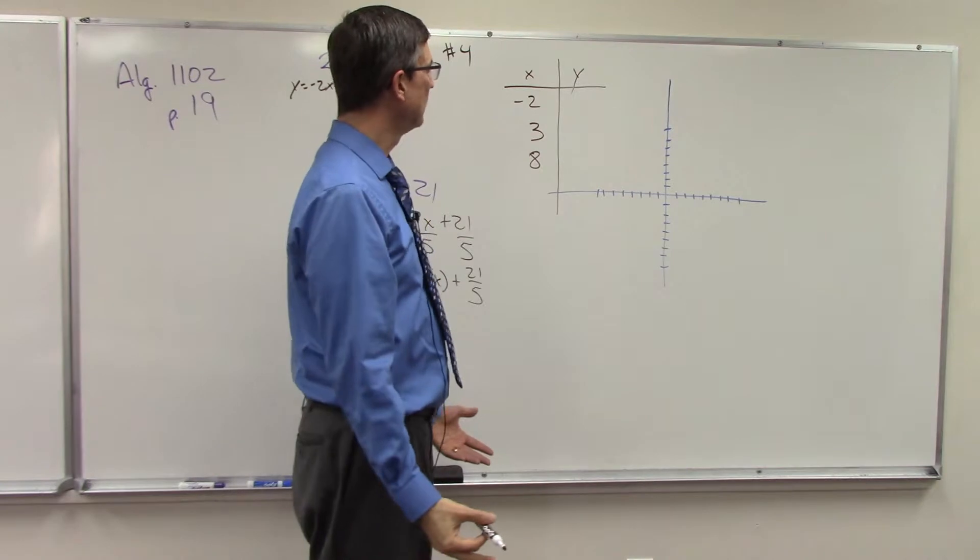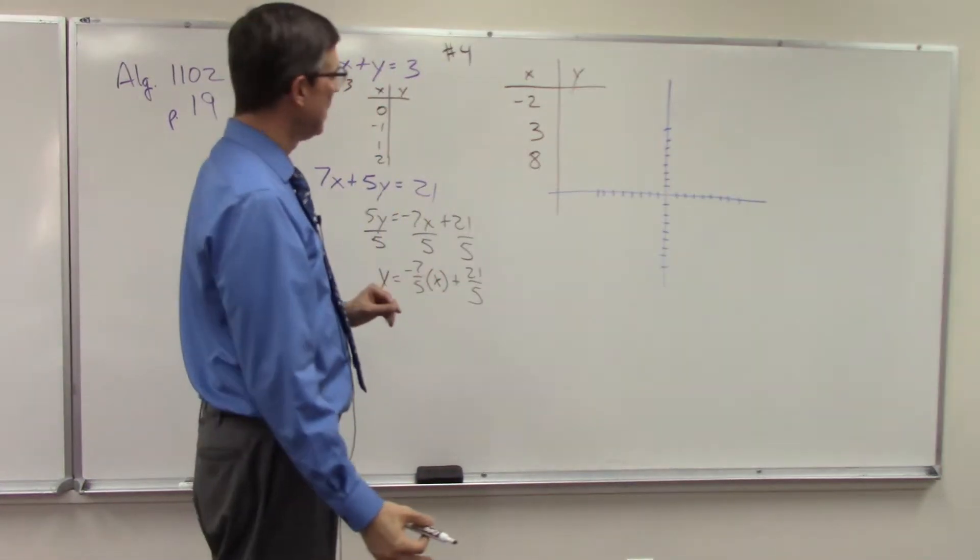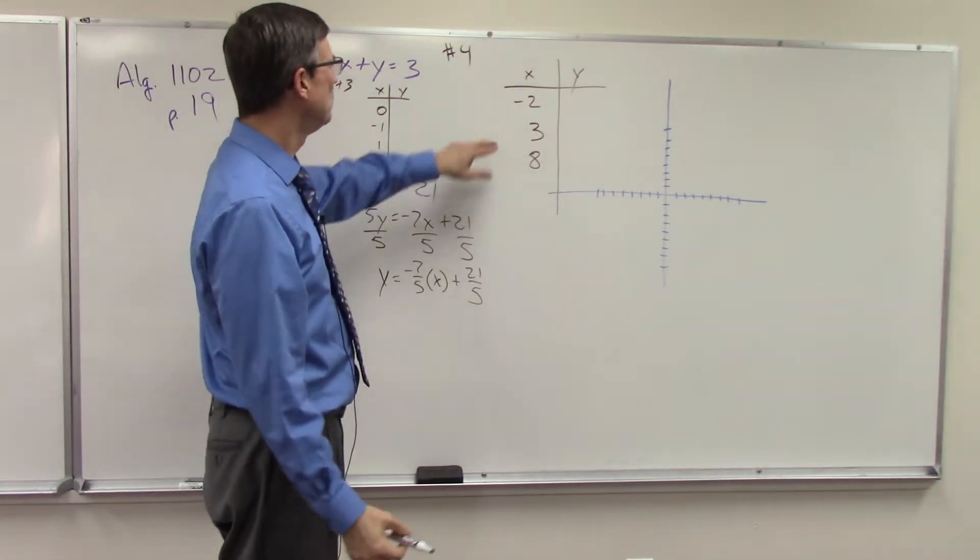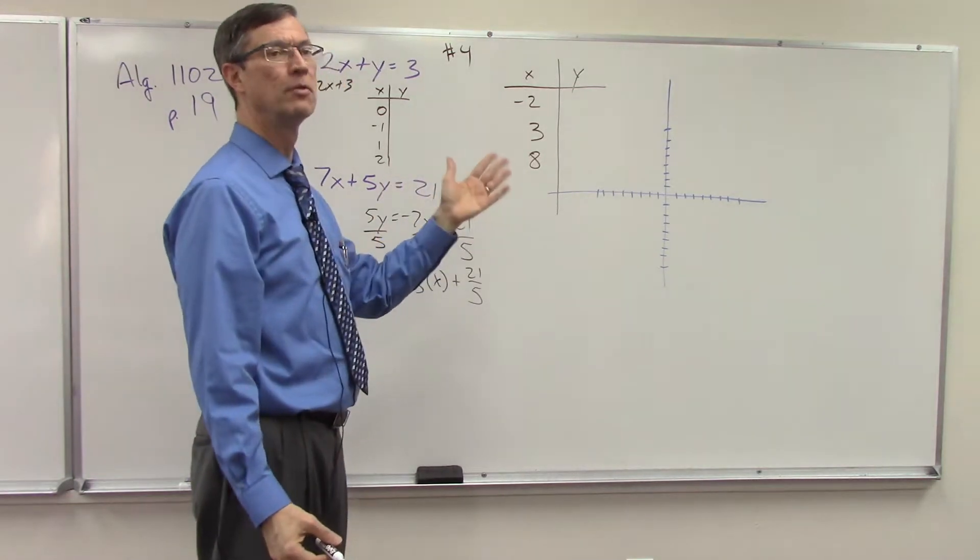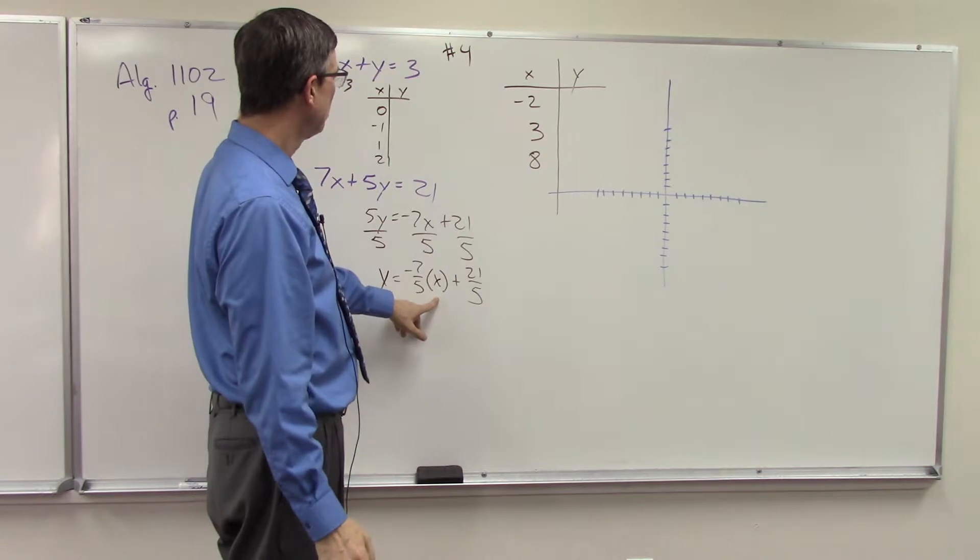Now, it just so works out that if we do that, we end up with a whole number for y. It's kind of complicated to explain how we know how to do that. But if you plug in these three numbers, then we don't have to be graphing fractions. We can graph actual whole numbers.